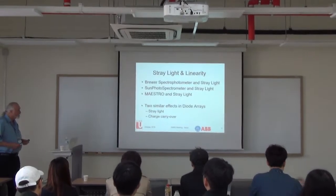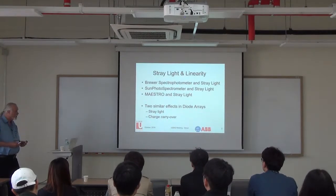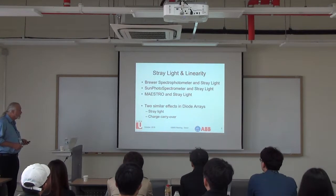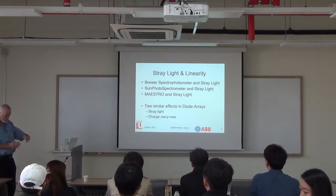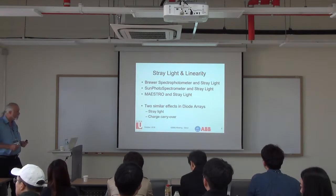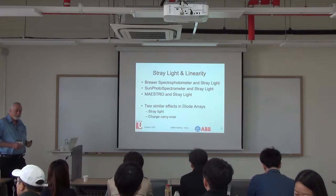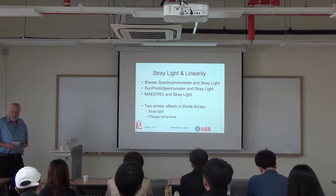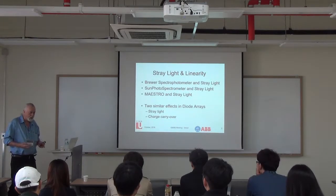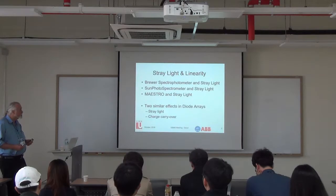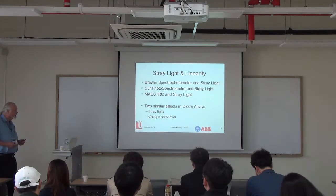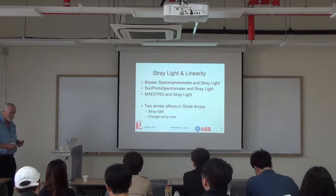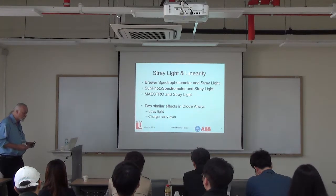There are a lot of issues involving stray light. I've worked with three different instruments: the Brewer, and Sunport, which was a small handheld diode-based instrument we built to fly on the space shuttle, and then it flew for almost 10 years on the ER-2 aircraft measuring radiation at flight level to understand photochemistry better. Stray light was an important issue in correcting the UV data to get the J-value for photolysis.